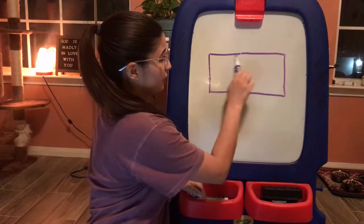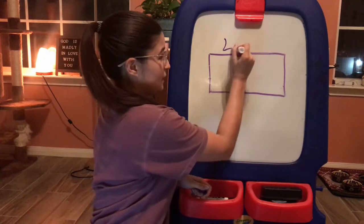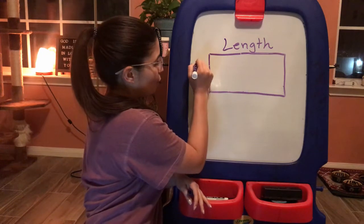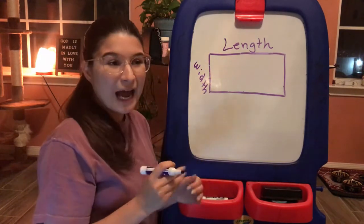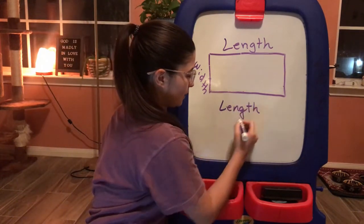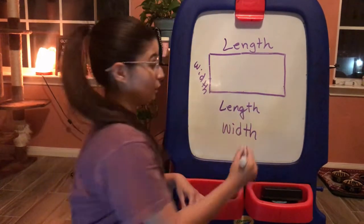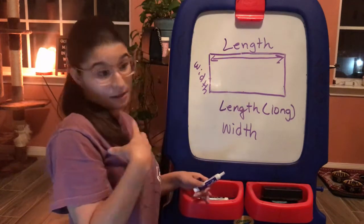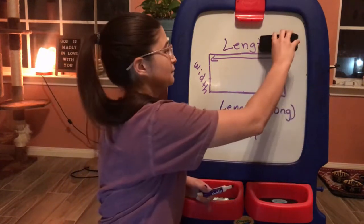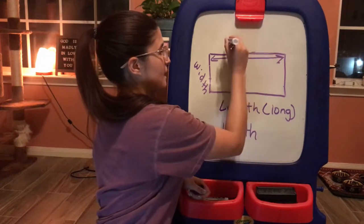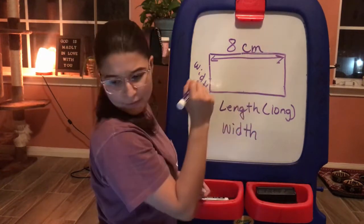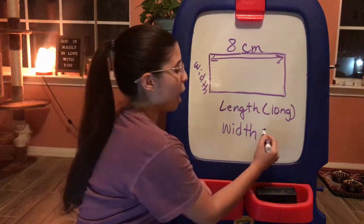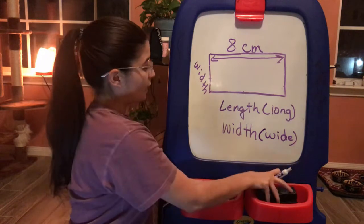If you look at questions one and two on your guided notes right now, we're going to go over that. So this right here is the length. Length is basically just telling you how long something is. On the side, or the shorter side, that's going to be the width. And width tells us how wide something is. So length versus width.